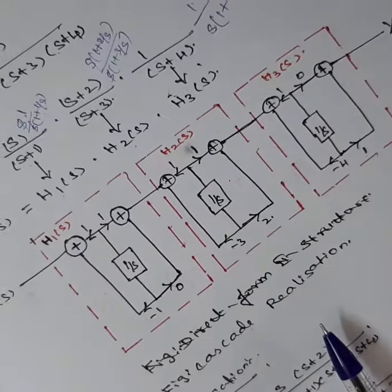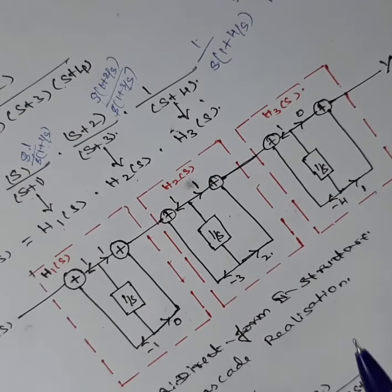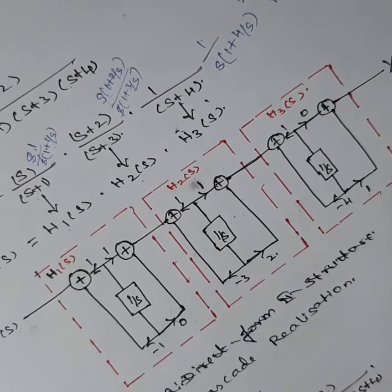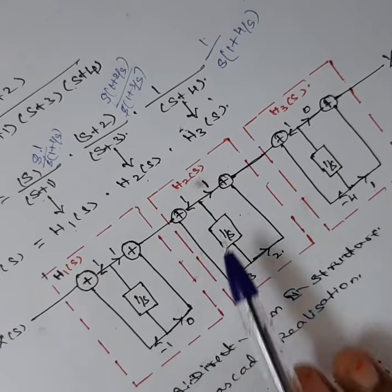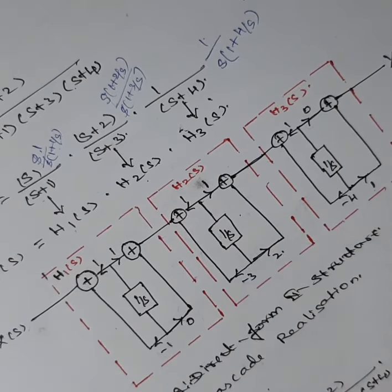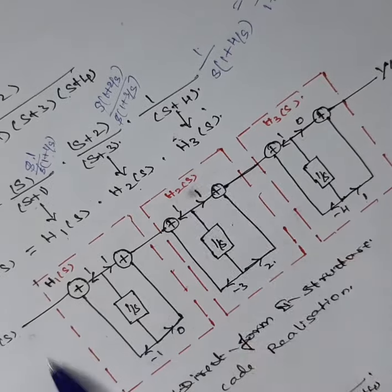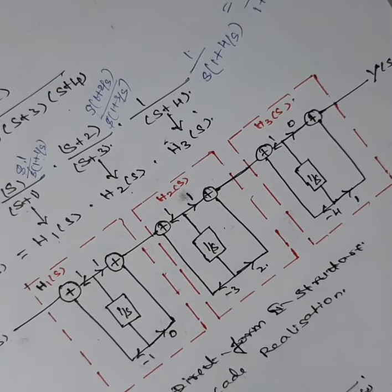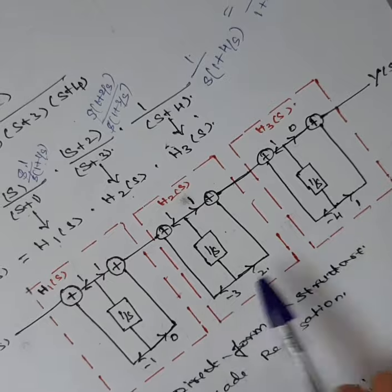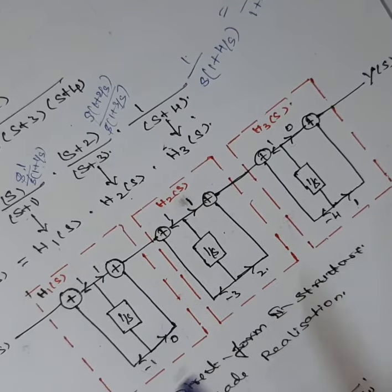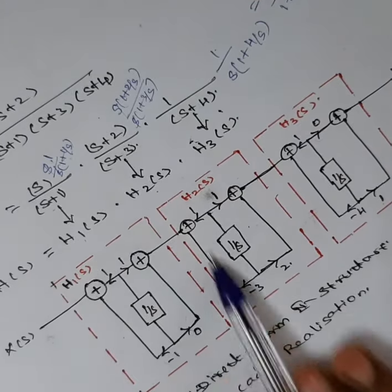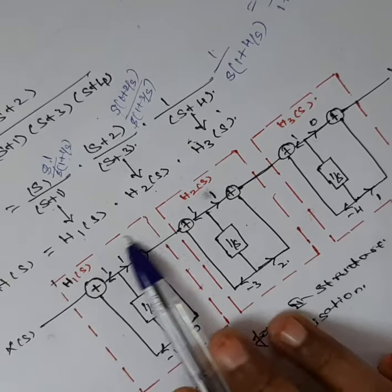To draw this diagram, you must know about Direct Form 2 structure, which was covered in the previous video. Cascade structure is a combination of Direct Form 2 structures.